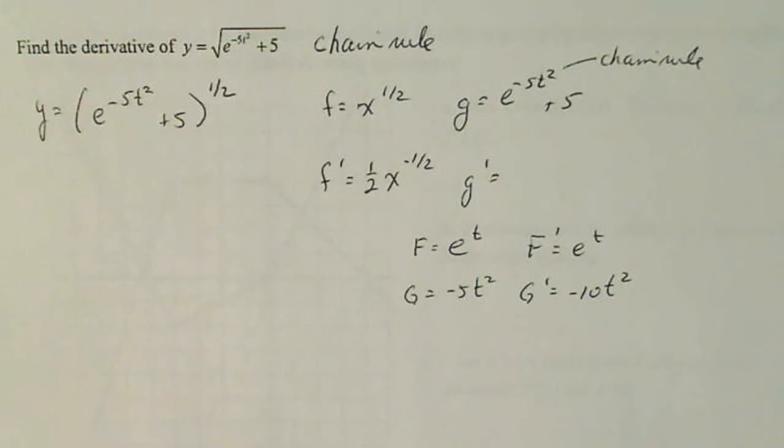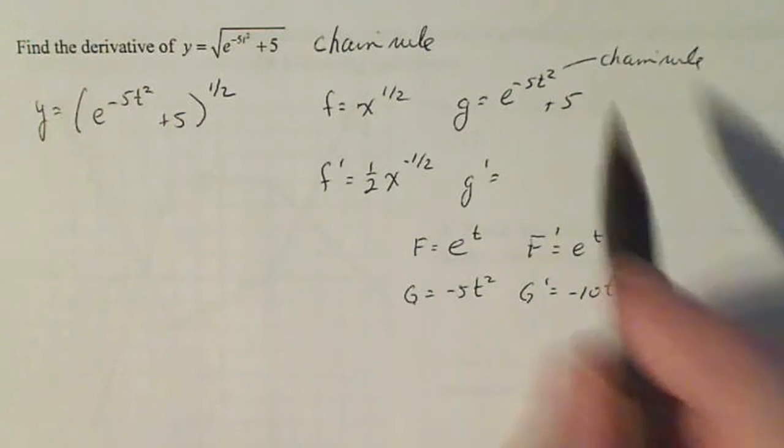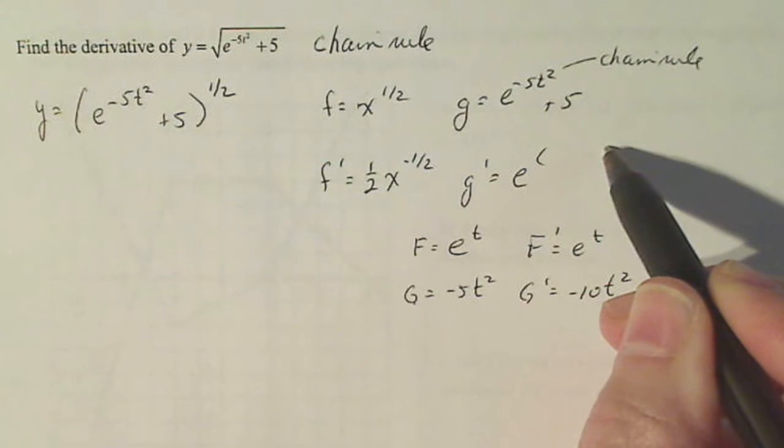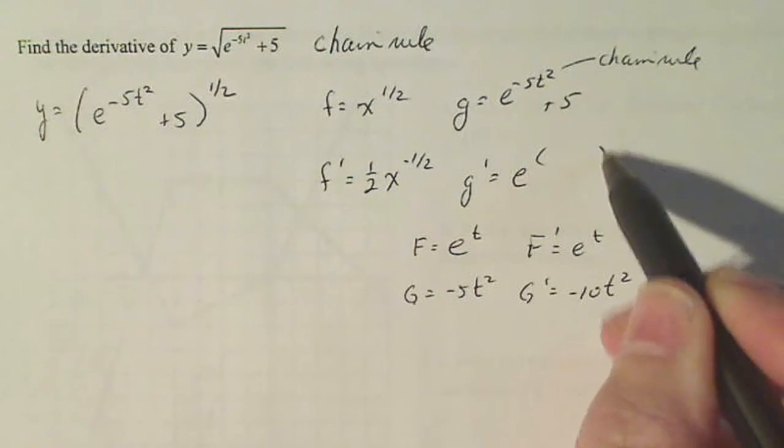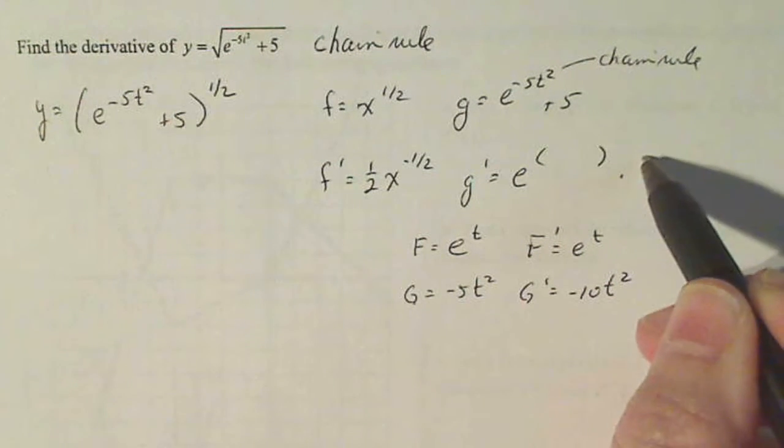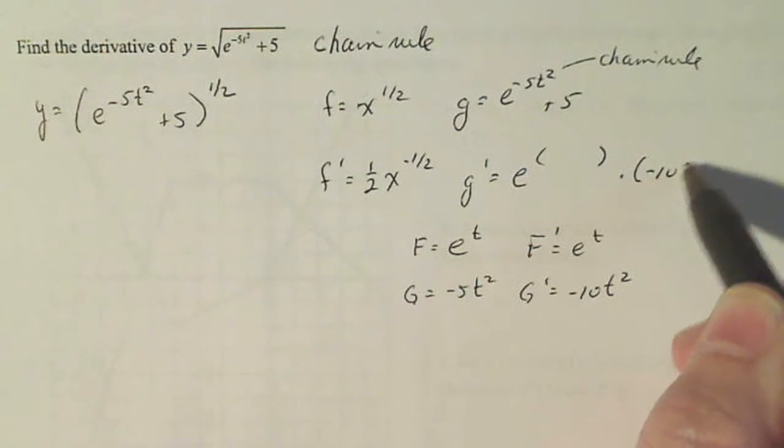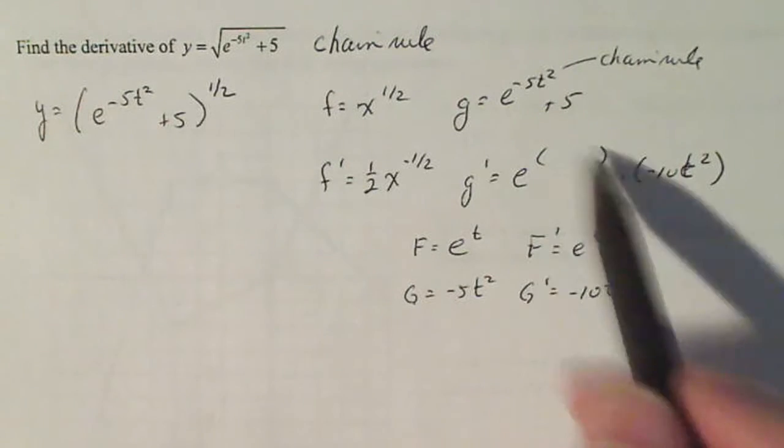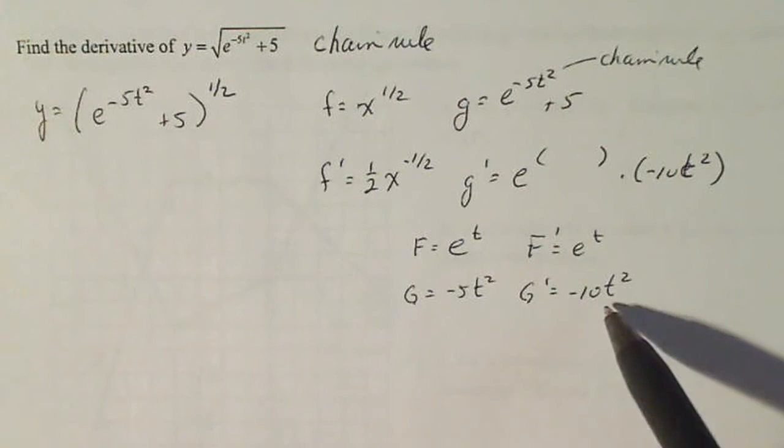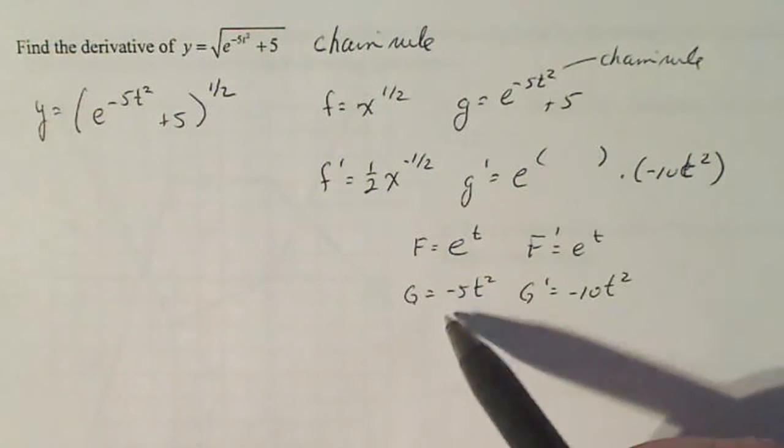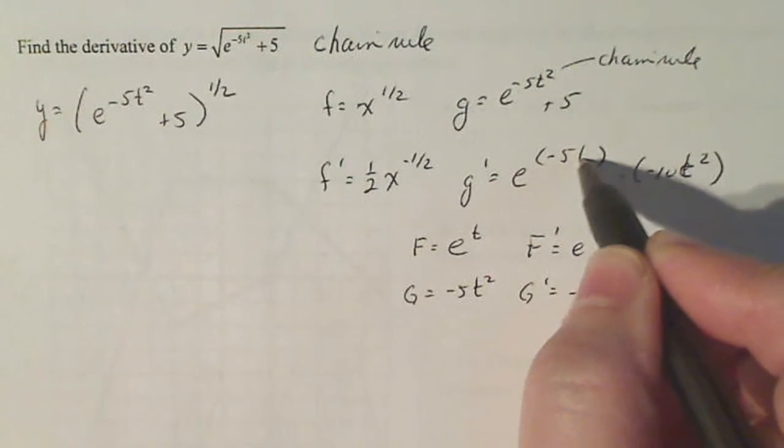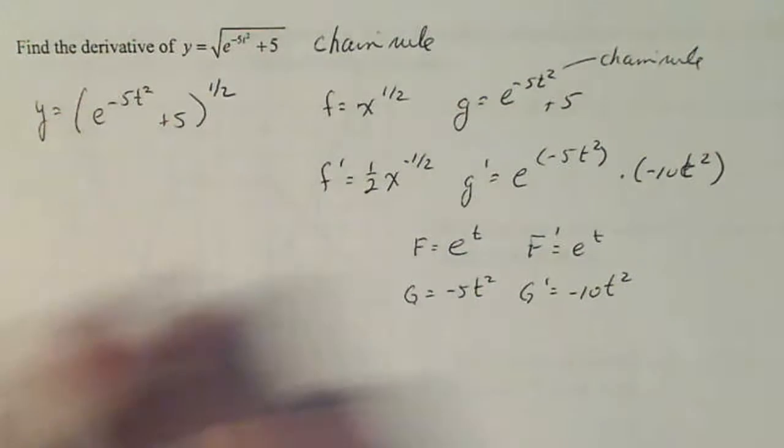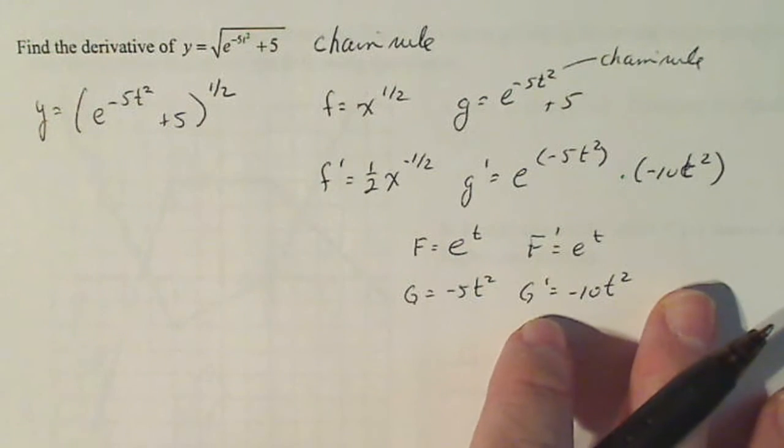So what does the chain rule say? The chain rule says I take F prime. I always leave it blank right there. F prime times G prime. And I'm using parentheses because that's a negative sign. So F prime times G prime. And then this space here is for the original G minus five t squared. So that can be simplified, but I'm not gonna worry about simplifying it right now.